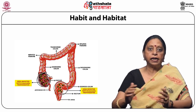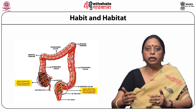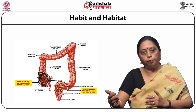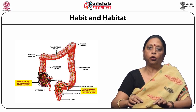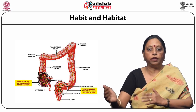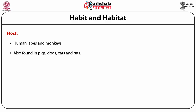Entamoeba histolytica exists in two forms: the minuta form, which is non-pathogenic and non-invasive, and the virulent or pathogenic tissue-invading form. The minuta form is smaller in size and lives in the lumen of the large intestine, whereas the virulent form lives in the mucosa and submucosa. The hosts for Entamoeba histolytica are humans, apes, and monkeys, though it is also found in pigs, dogs, cats, and rats.